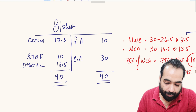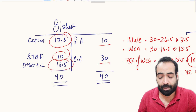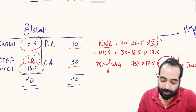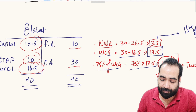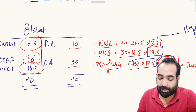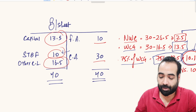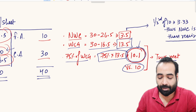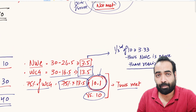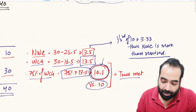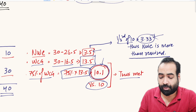Let us verify with a second example. Capital = ₹13.5, Short-term Bank Finance = ₹10, Other Current Liabilities = ₹16.5, Fixed Assets = ₹10, Current Assets = ₹30. NWC = Total Current Assets minus Total Current Liabilities = ₹3.5. Working Capital Gap = 30 minus 16.5 = ₹13.5. 75% of ₹13.5 = ₹10.125, meaning you are eligible for up to ₹10.125 while you have taken only ₹10 — you are well within acceptable norms and MPBF is met.